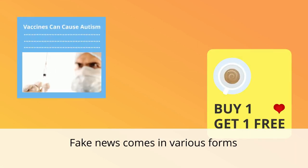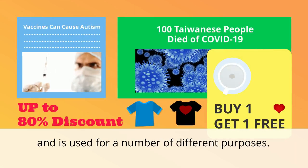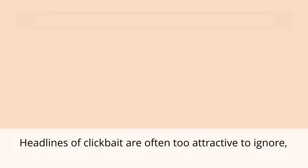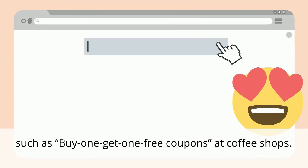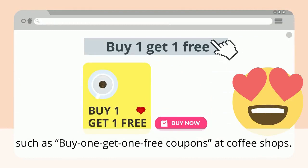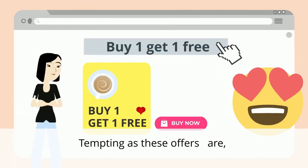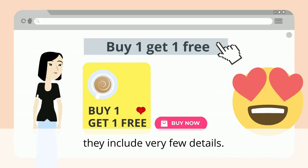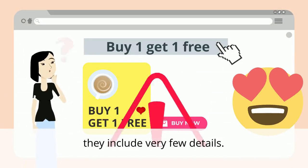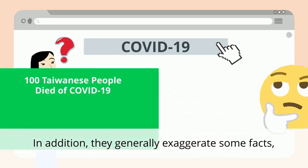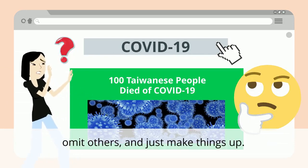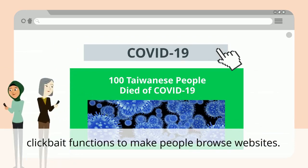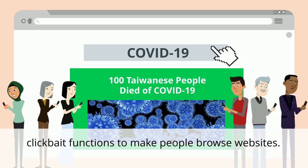Fake news comes in various forms and is used for a number of different purposes. One of them is clickbait. Headlines of clickbait are often too attractive to ignore, such as buy-one-get-one-free coupons at coffee shops. Tempting as these offers are, they include very few details. In addition, they generally exaggerate some facts, omit others, and just make things up. In short, clickbait functions to make people browse certain websites.